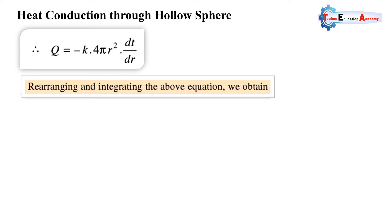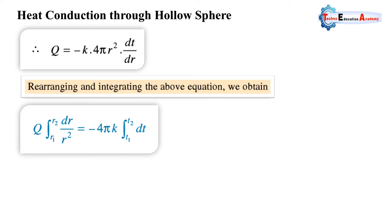Rearranging and integrating the above equation on both the left-hand side and right-hand side — the variable is dr and the temperature difference is dT. Since we are considering uniform heat transfer, Q is kept outside the integration. Cross-multiplying for simplification, the integration of 1/r² is set up with the r terms on the left-hand side and the dT term on the right-hand side.